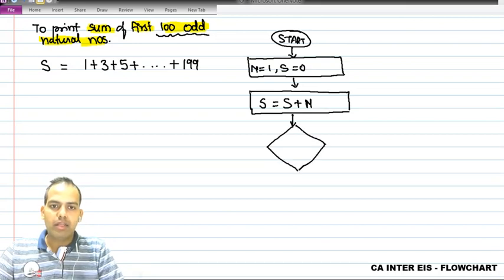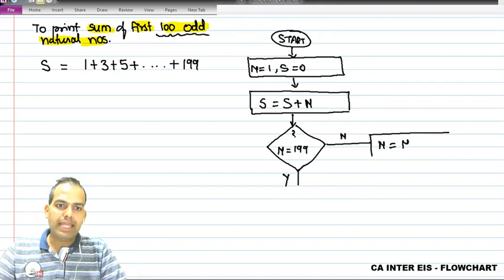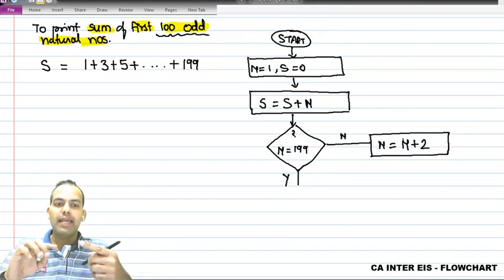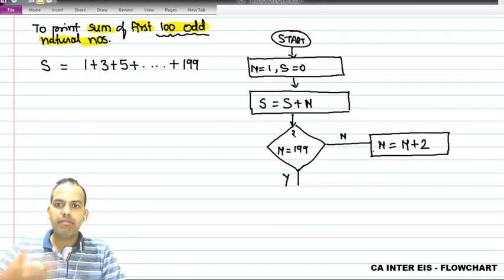Okay, now I am taking n is equal to 199. The moment program touches 199, it should come down. Otherwise you carry forward. Okay, n is equal to - here is a catch. I will change it by 2. You remember that in the earlier sum I changed it by n plus 1. This time I'm changing it by n plus 2. The simple logic is that n plus 2, that means the value will change by 1, 3, 5, 7, likewise.